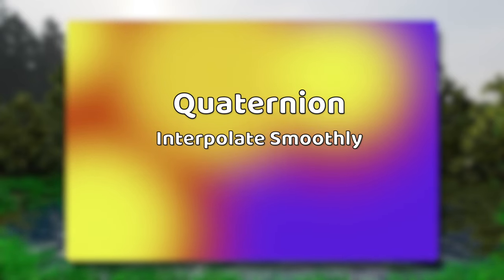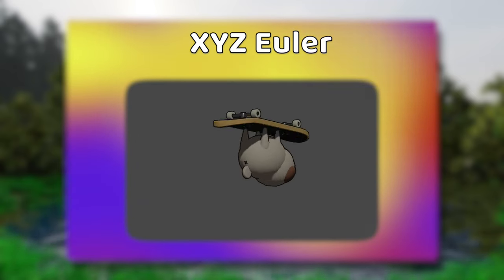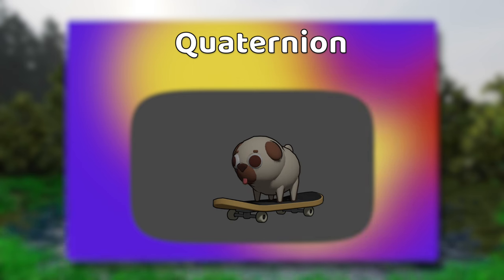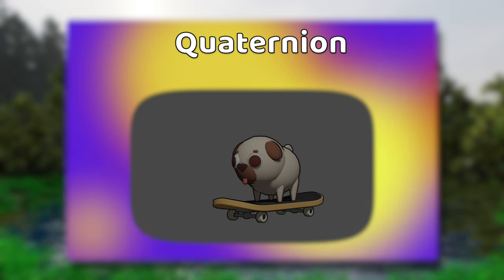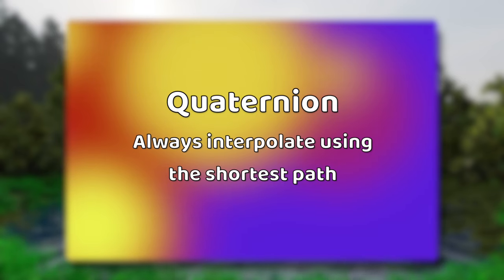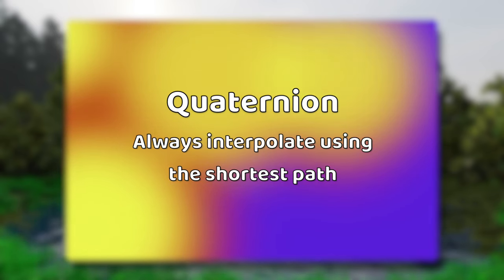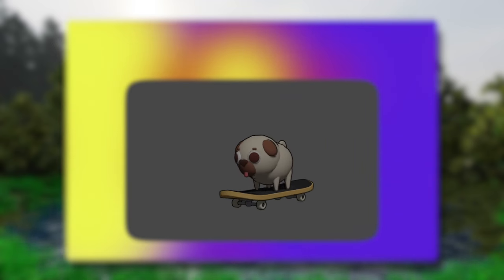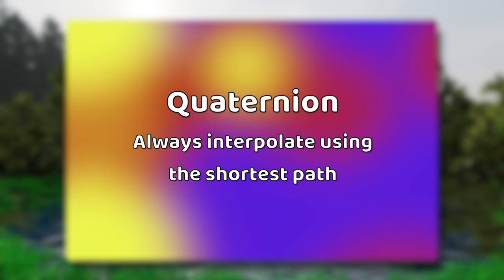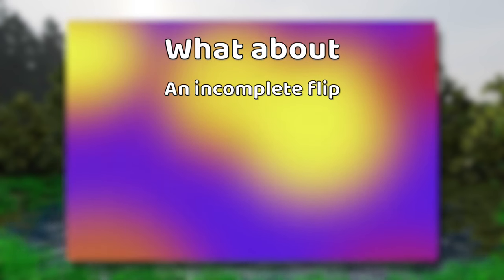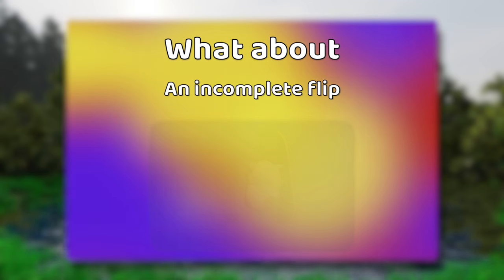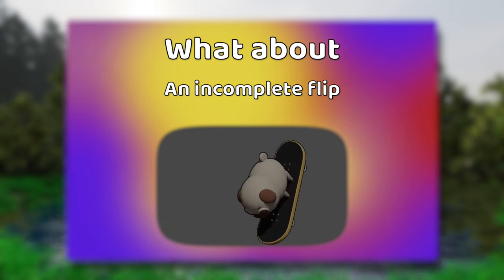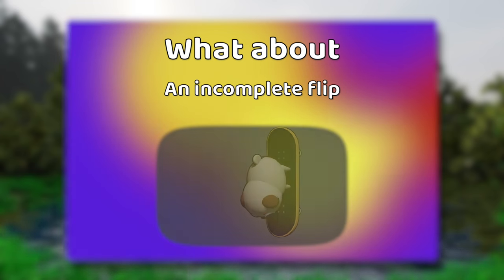Let's take a look at one more animation: a backflip. The finishing value will be 360 degrees around the X-axis. Here's what it looks like calculated using X, Y, Z Euler values — Euler can work pretty well when only concerned with one axis. Now let's see how the Quaternion interpolation looks. It won't move at all. This is because when you interpolate with Quaternions, it will always take the shortest path. Since a full backflip returns you to the same orientation, the Quaternion values do not need to change. If instead we did an incomplete backflip of only 270 degrees, the interpolation wouldn't go all the way around — it would go directly to the nearest value.